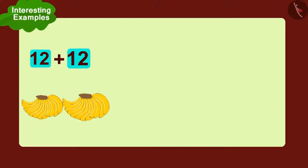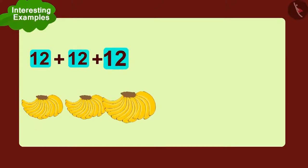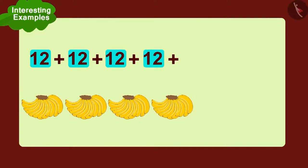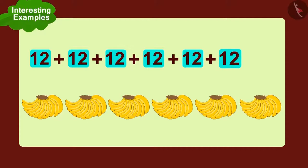Twelve added to twelve. Again add twelve. Again add twelve. Again add twelve. And finally add one more twelve. How much is that? Seventy-two. Can you write this in another way?